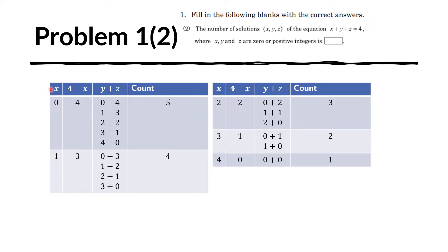So the possible values for x are only 0, 1, 2, 3, and 4. If we move x to the other side, we are left with y plus z equals 4 minus x. Because y and z are all positive integers or 0, we can list the possible combinations. First, let us substitute 0 for x: that means y plus z should equal 4. So this column must equal 4 minus x.